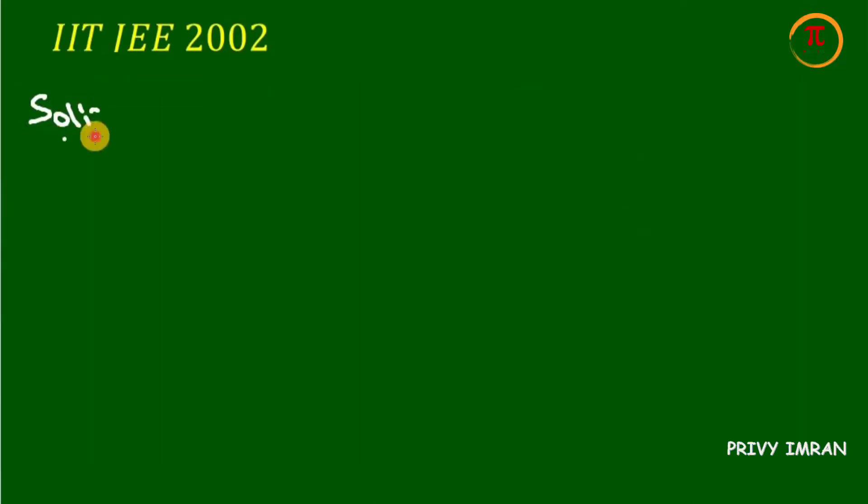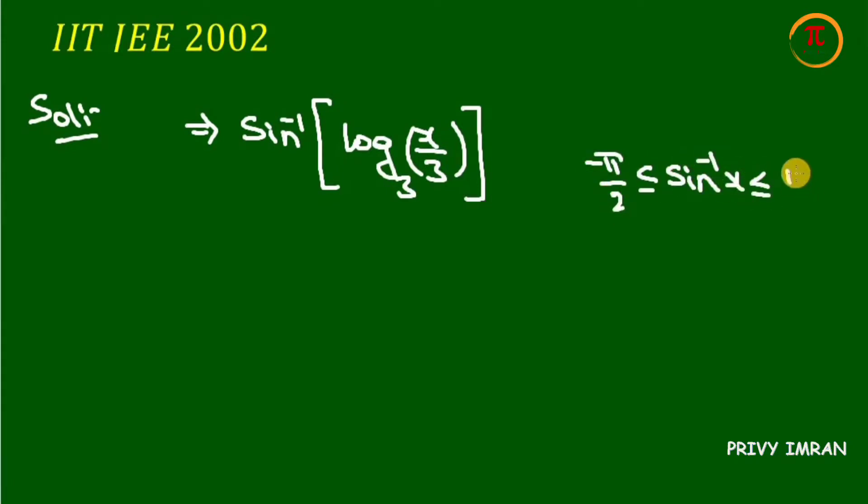First of all, let me consider the given function sin inverse of log base 3 of x divided by 3. We already know that sin inverse of x lies between minus pi divided by 2 to plus pi divided by 2. Then the domain of sin inverse means x lies between minus 1 to plus 1.